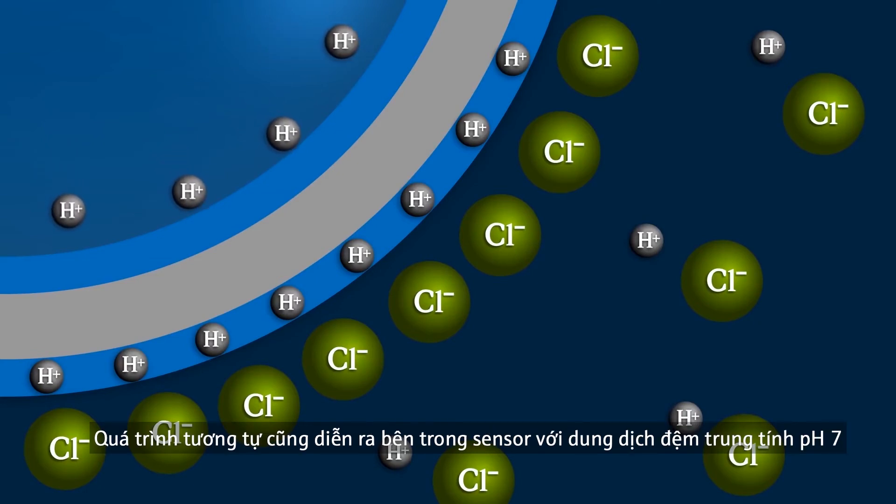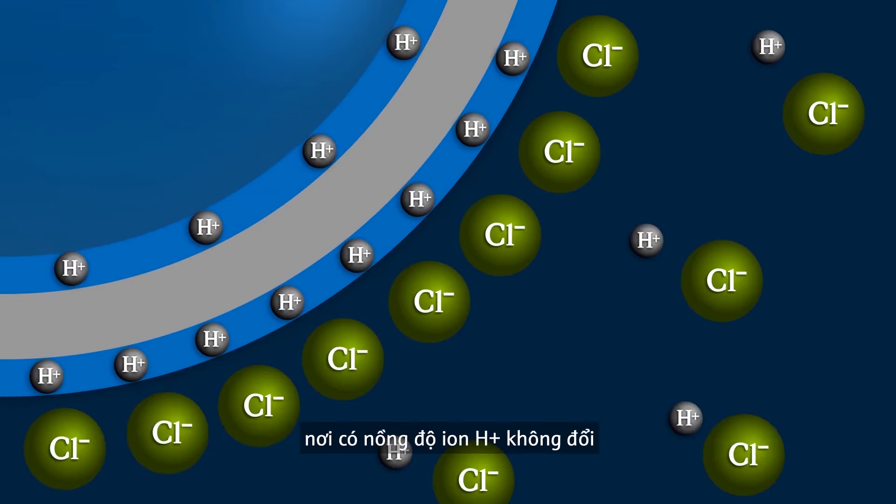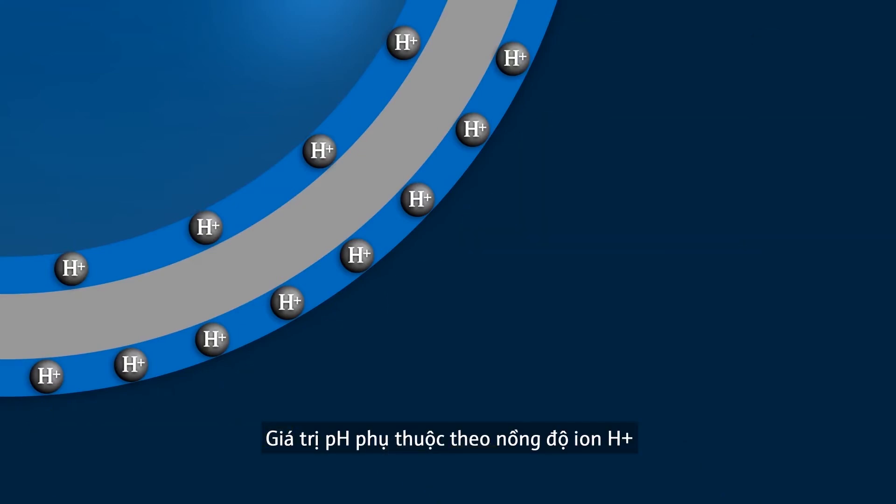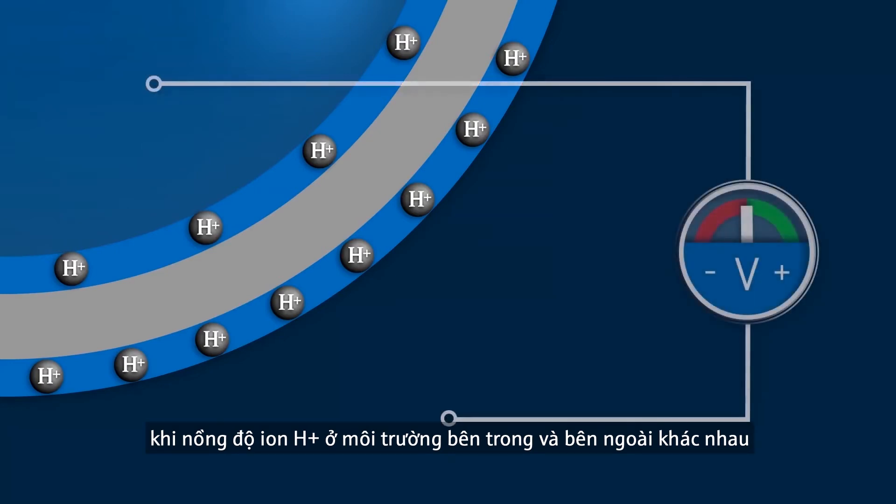The same process occurs on the inside of the sensor with the neutral solution buffered at pH 7 that has a constant concentration of hydrogen ions. If the hydrogen ion concentration, hence the pH value on the inside differs from the concentration on the outside, a measurable potential difference forms.